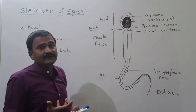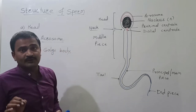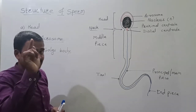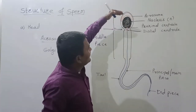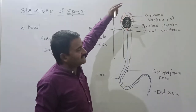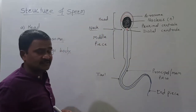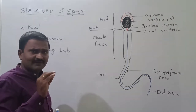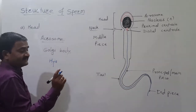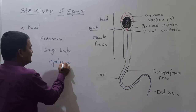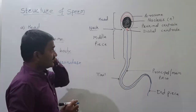This acrosome contains certain hydrolytic enzymes, or digestive enzymes. These enzymes play an important role in the process of fertilization. At the time of fertilization, these enzymes are released out. One of them is a very important enzyme called hyaluronidase. Hyaluronidase is a hydrolytic enzyme present in the acrosome.